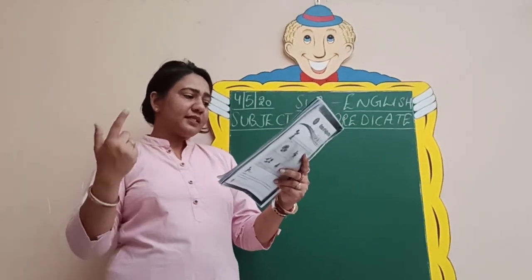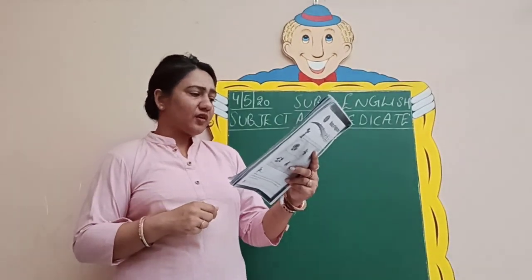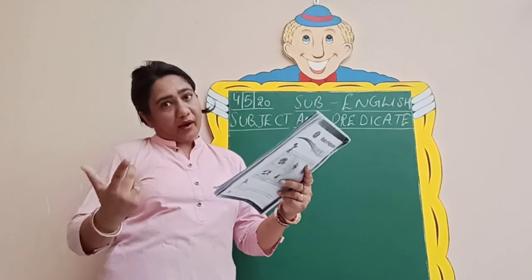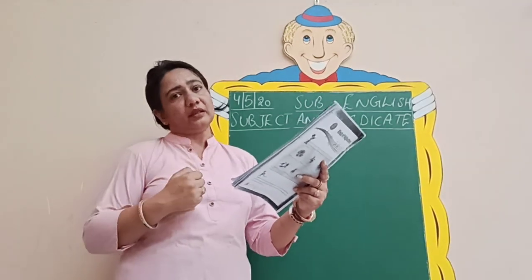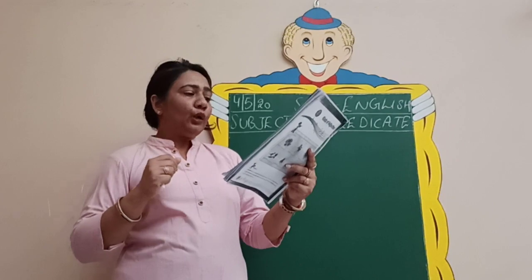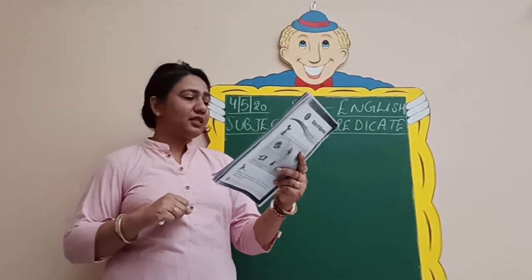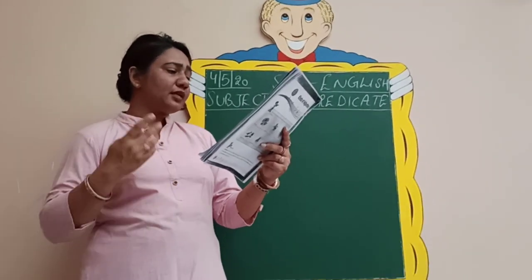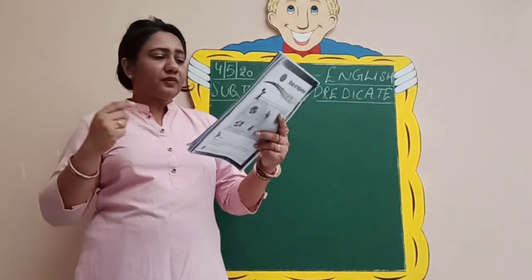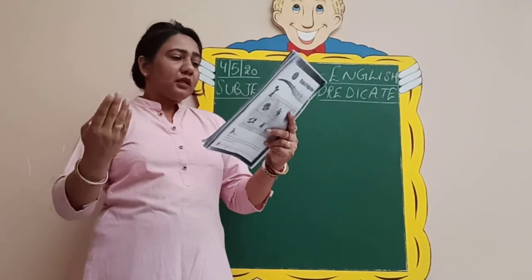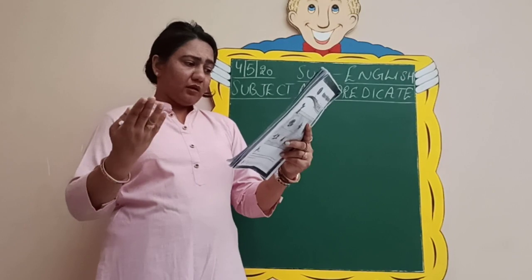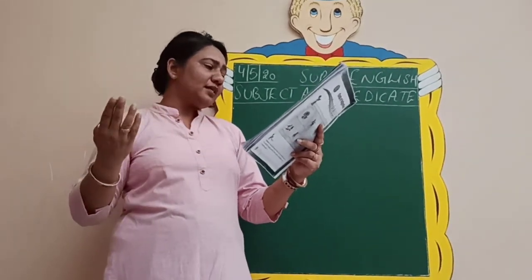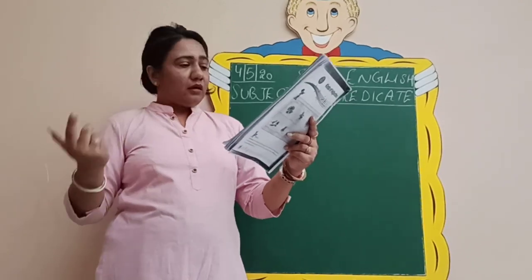For the second sentence, 'dash is crossing the road,' we can see a boy crossing the road in the picture, so I have written: Rohit is crossing the road. You can write any name of a boy. Then 'some students are dash' — you can write what you see in the picture. Some of the students are playing football on the road.